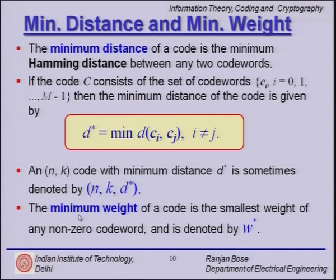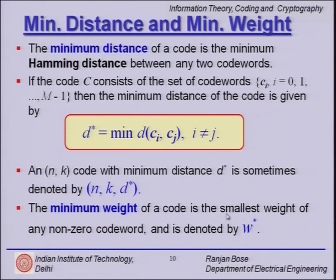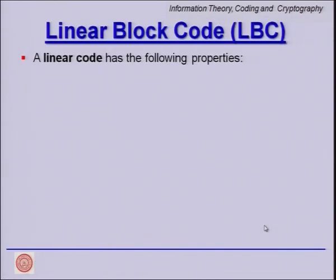The minimum weight of a code is the smallest weight of a nonzero codeword, denoted by w*. This is a property of the code: I calculate the weight of each codeword in the set, and the smallest value, barring the all-zero codeword, is w*.